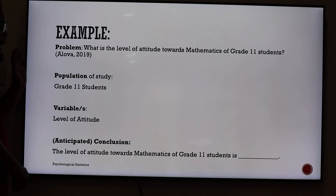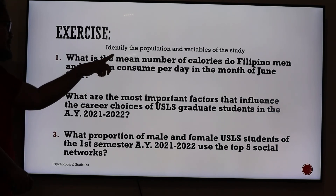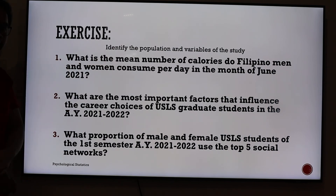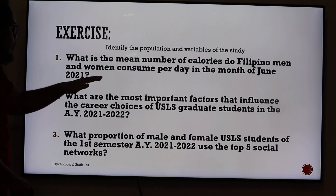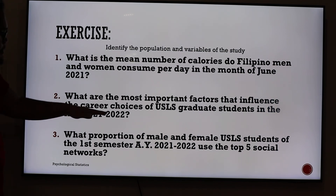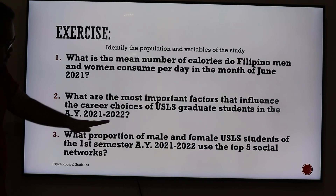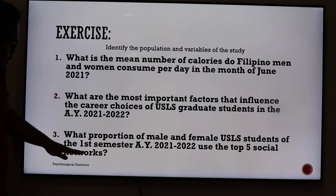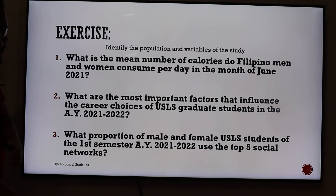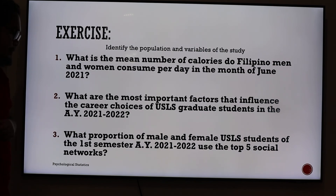We'll end with exercises, which we'll be answering in class. Identify the population and the variables of the study for these three problems. Number one: what is the mean number of calories Filipino men and women consume per day in the month of June 2021? Number two: what are the most important factors that influence the career choice of USLS graduate students in AY 2021–2022? Number three: what proportion of male and female USLS students of the first semester AY 2021–2022 use the top five social networks?